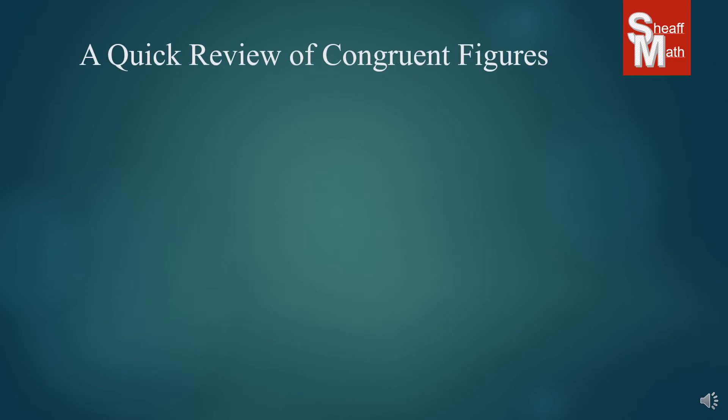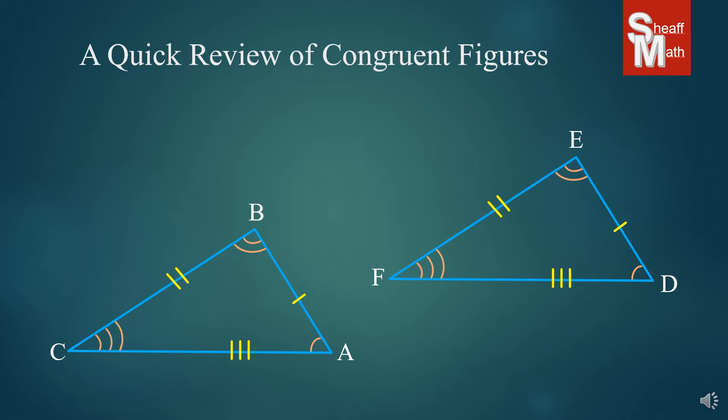Now, let's look at a couple of congruent figures here and do a quick review. What we know about congruent figures is that they have all of the same corresponding sides, the same corresponding angles, and they're all congruent, meaning they're the same measure of side and the same measure of angle.